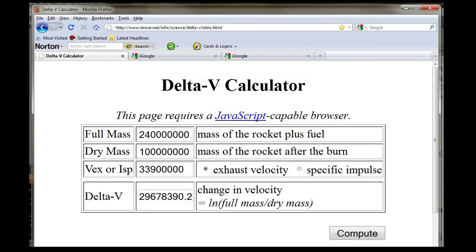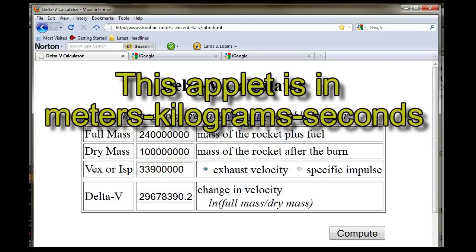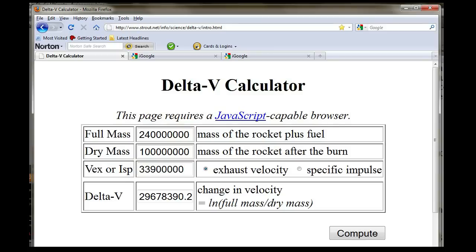Now we can stick our numbers into one of those online Java applets that do Tsiolkovsky's equation, and we find that we need about 140,000 metric tons of deuterium to get us to one-tenth light speed. That's more than the mass of the craft. Our multiplier is then 2.4 times the mass of the payload.